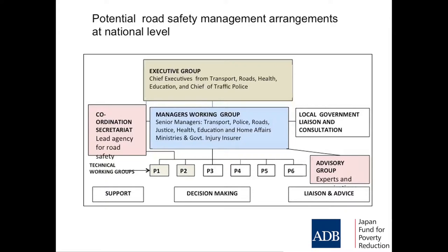There are your chief executives — they would probably meet three times a year as a group. When they do meet for the first time, many have never met each other before. Here's the heart of the road safety effort: the managers working group. They need to meet about every month, look at action plans or strategies, examine what the crash data is telling them, and receive papers and recommendations from their staff and from technical working groups.